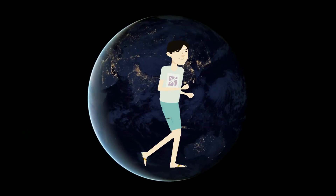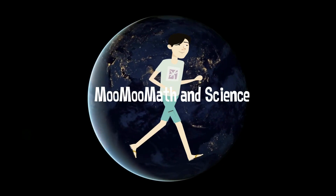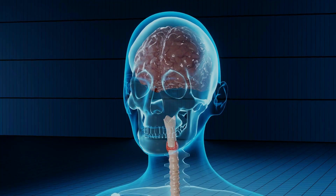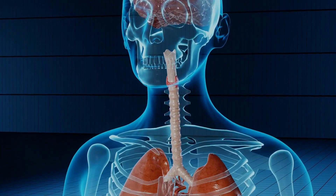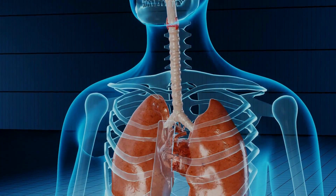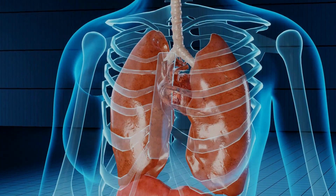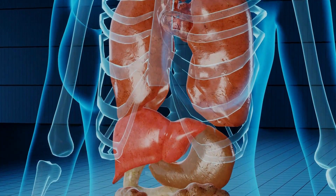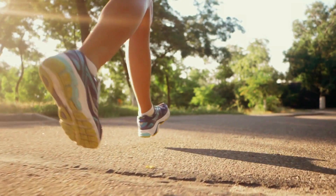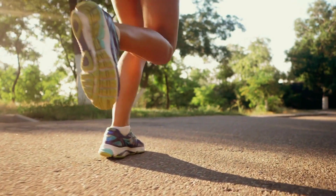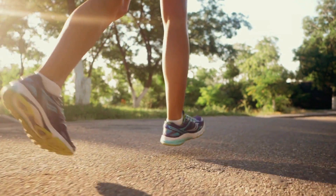Welcome to Moo Moo Math and Science. In this video, I will explain what happens to the human body as it trains at three different levels of intensity, and why these three levels of intensity should be included in your training.